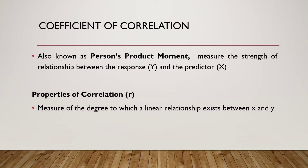The coefficient of correlation, also known as Pearson's product-moment, measures the strength of the relationship between the response y and the predictor x. It is denoted by r and measures the degree to which a linear relationship exists between x and y.